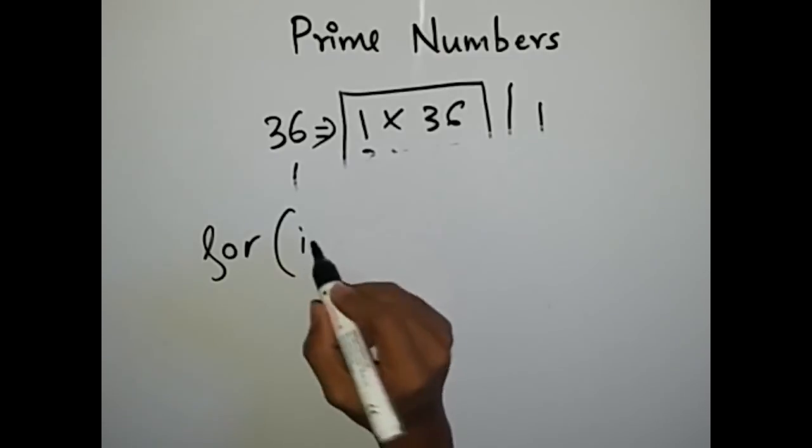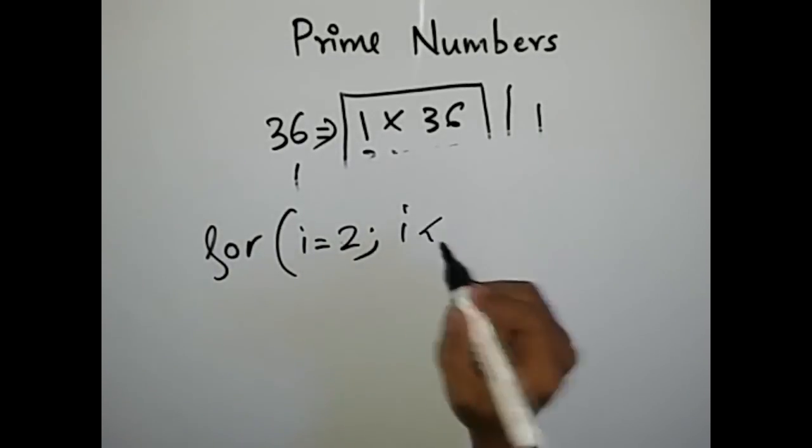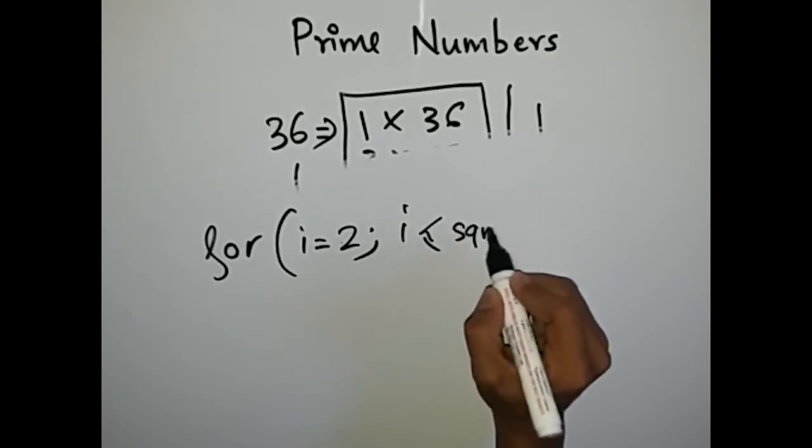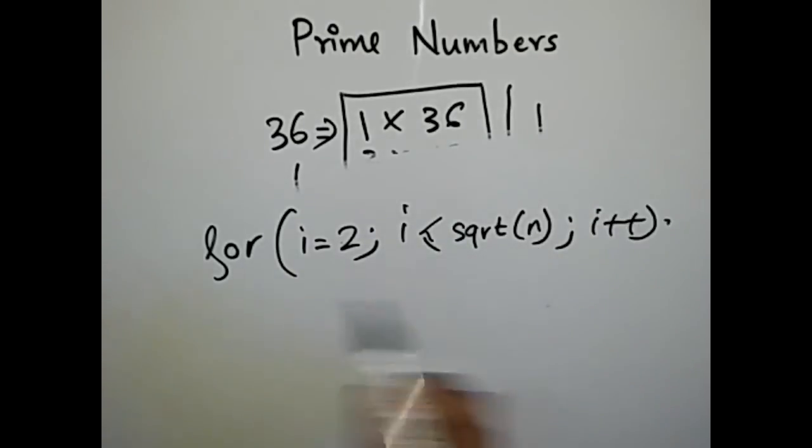So always use a for loop which is going from i equal to 2 to i less than equal to square root of that number. This sqrt is a function in math.h.